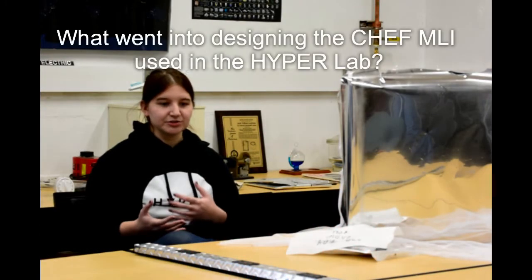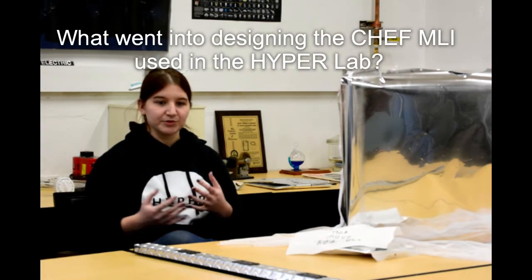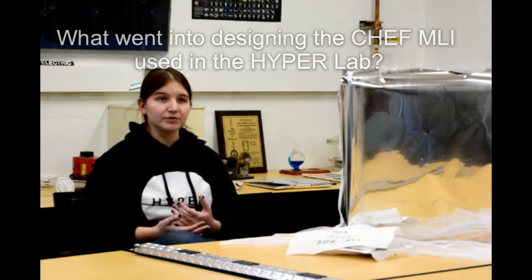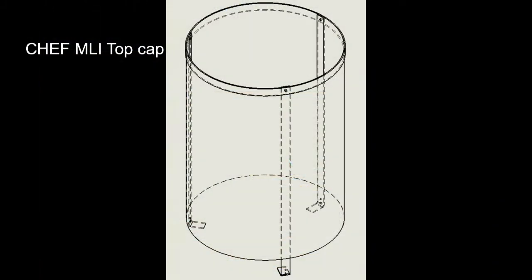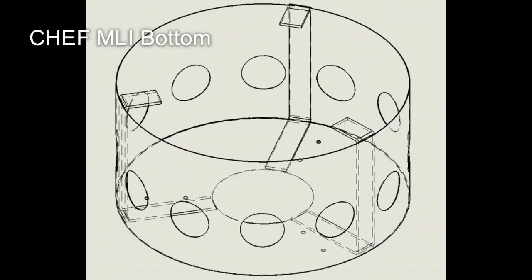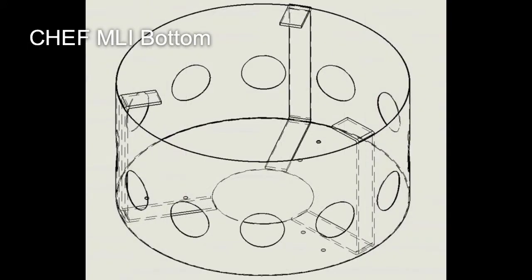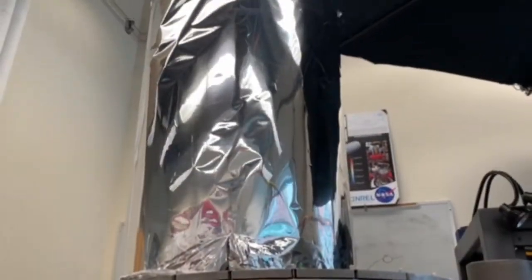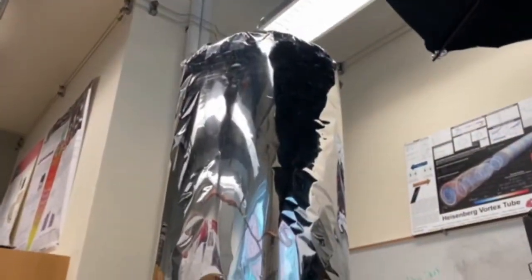Not every shield does have a frame and top cap, but with Chef in particular, there was one. Some of the considerations for it were the amount of space that was available. The outside of Chef was already in existence, and we knew how much space there would be with the internal components of Chef, which gave us the frame that we would need to fit within.